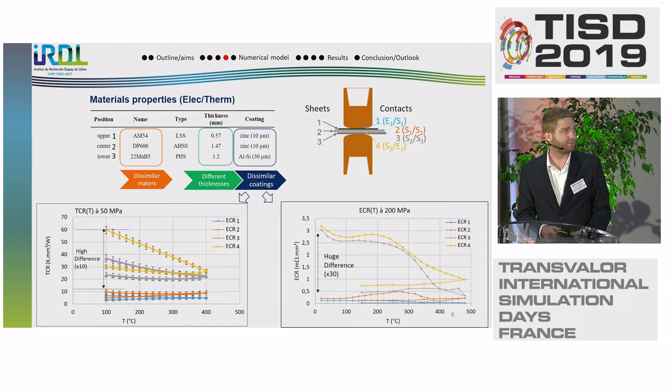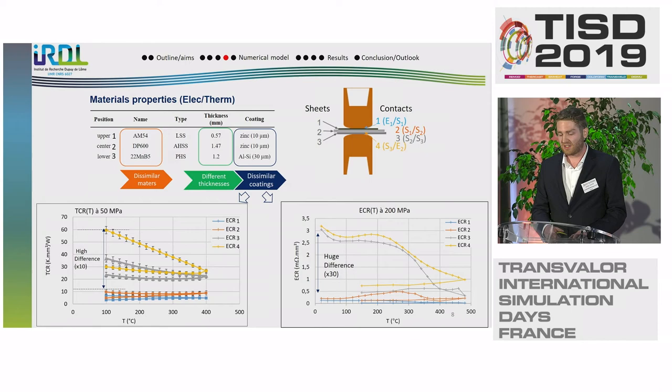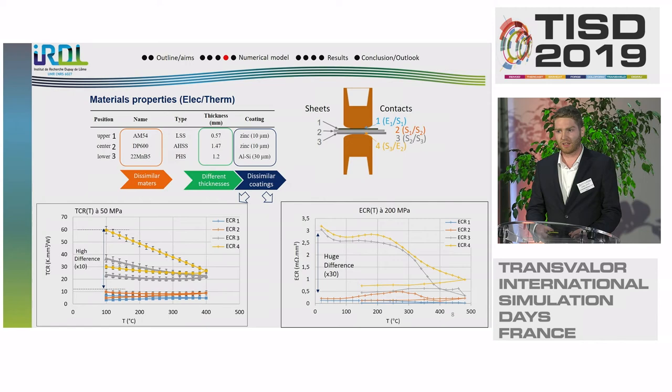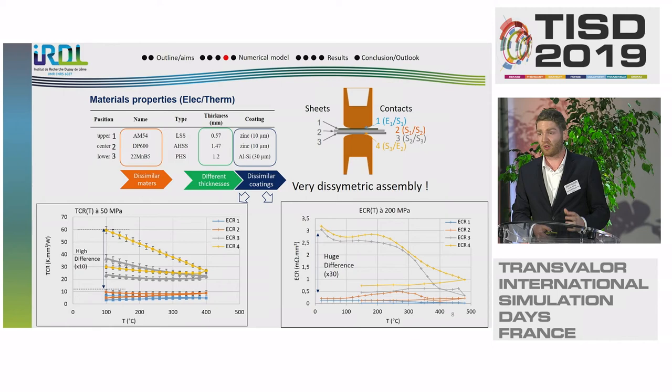The coating for the AM and the DP steel is zinc, and its thickness is around 10 micrometers. For the 22MnB5, there is a 13-micron, very resistive layer of aluminum-silicium. As we can observe on the graph, the thermal contact resistance is around 10 times higher for the contacts with the aluminum-silicium coating. And even more importantly, there is a huge difference of 30 times between the aluminum-silicium coating and the zinc coating for the electrical contact resistance. So all of these differences induce a strongly disymmetric assembly.